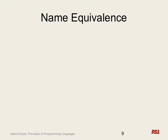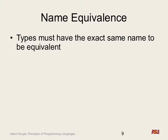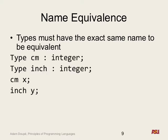We're going to look at some different types of type equivalence. The first one is the easiest example: name equivalence. Using your powers of inductive reasoning, what would you think it's going to check to say two types are equivalent? The name of the type — they must have the exact same name to be equivalent. So in this case, if we have a centimeter and an inch and we say can x equal y, would this be allowed with name equivalence? No, because it's checking the exact names: the type of x is centimeter, the type of y is inch — those are not the same type, therefore this is an error.